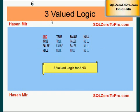Bringing null into the picture results in a concept called three-valued logic. Opponents of null basically present this logic to attack relational theory. Three-valued logic complicates things, as you can see in this matrix.